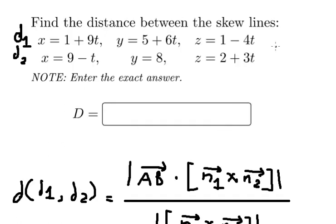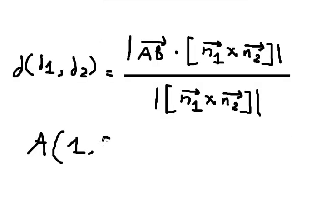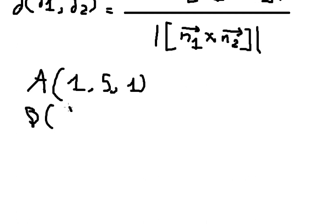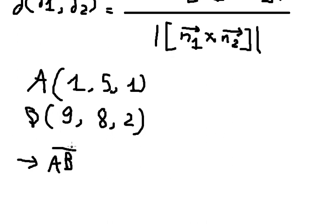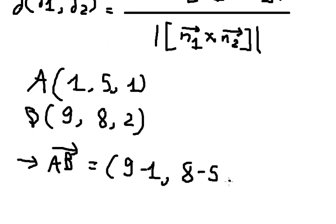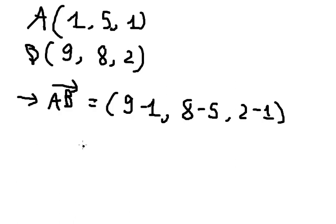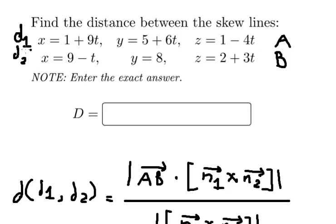So let's say point A is on d1 and point B is on d2. We have point A at (1, 5, 1) and point B at (9, 8, 2). So we can find vector AB, which is (9 minus 1, 8 minus 5, 2 minus 1), giving us (8, 3, 1).